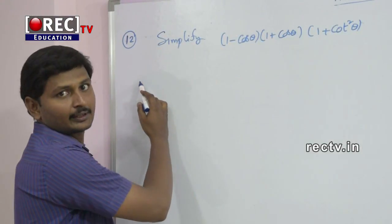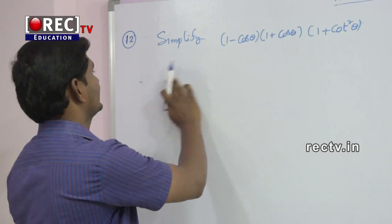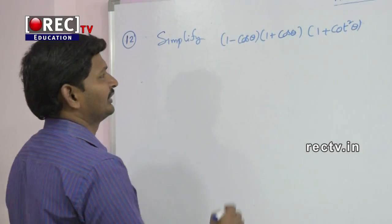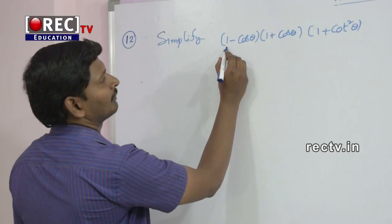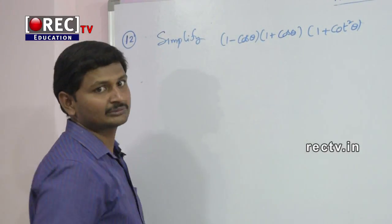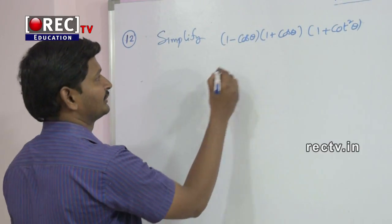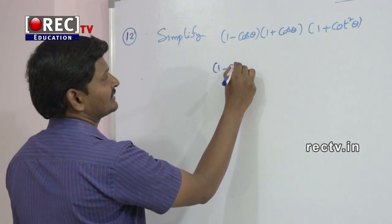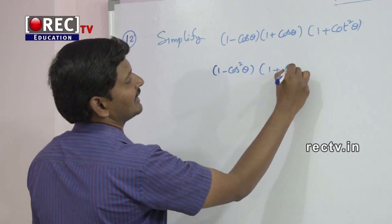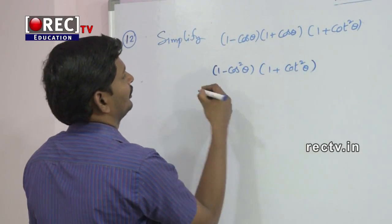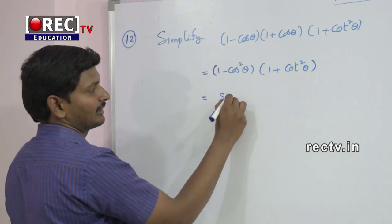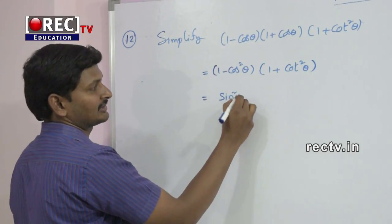Question number 12. Simplify 1 minus cos theta into 1 plus cos theta into 1 plus cot squared theta. We apply the identity a plus b into a minus b equals a squared minus b squared to the first two factors, giving 1 minus cos squared theta into 1 plus cot squared theta.